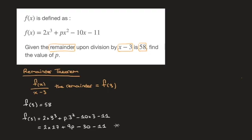And if I carry on with my working right here, that leads to f(3), which equals 2 times 27, which is 54, plus 9p minus 30 minus 11.